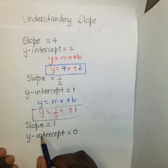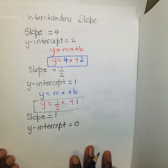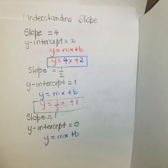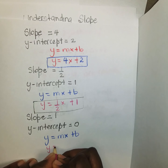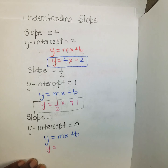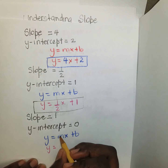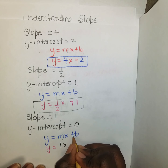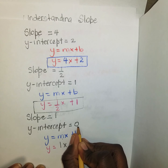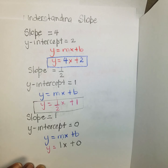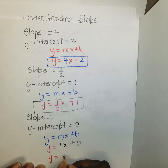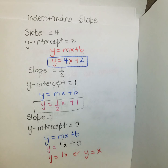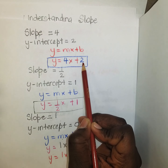Let's try this one: the slope is 1 and the y-intercept is 0. y = mx + b — m is 1, so you can write 1x or just x, and b = 0. So y = x in its simplest form.